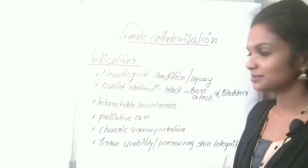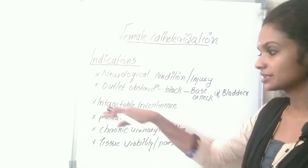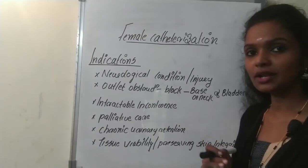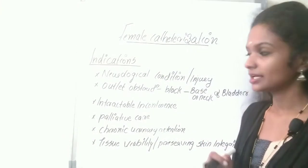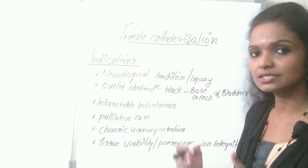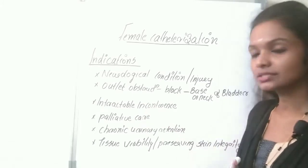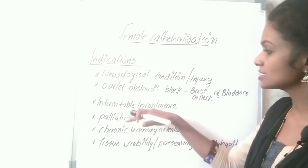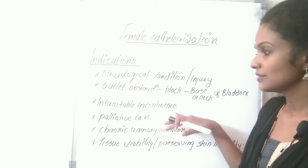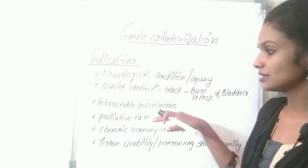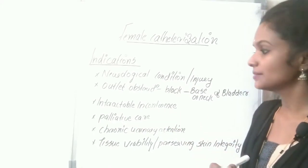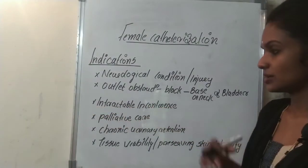Intractable incontinence means catheterization is used to control incontinence — the involuntary passage of urine. The patient cannot control the sphincter, and whenever they perform any strenuous activity such as sneezing or coughing, urine passes involuntarily. When all other methods fail to control incontinence, catheterization is used. That is known as intractable incontinence.